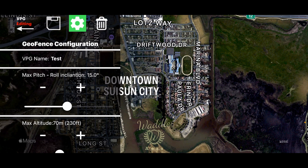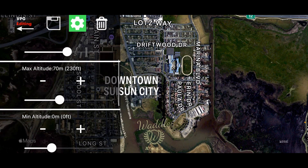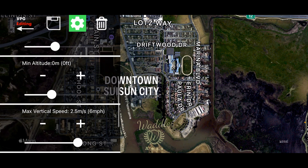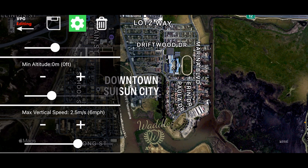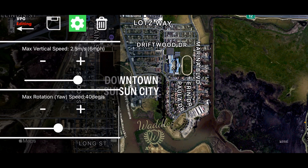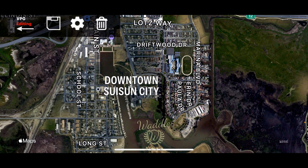You start with a max pitch roll inclination, which defaults to 15 degrees. You can set a max altitude — defaults to 70 meters. Let's drop that down. You can also set a minimum altitude, which defaults to zero. For demonstration purposes we'll set that at 15 meters, 49 feet. You can also set the max vertical speed and the max yaw rotation. We'll go ahead and slow the max yaw down. Now touch the gear to make that go away.